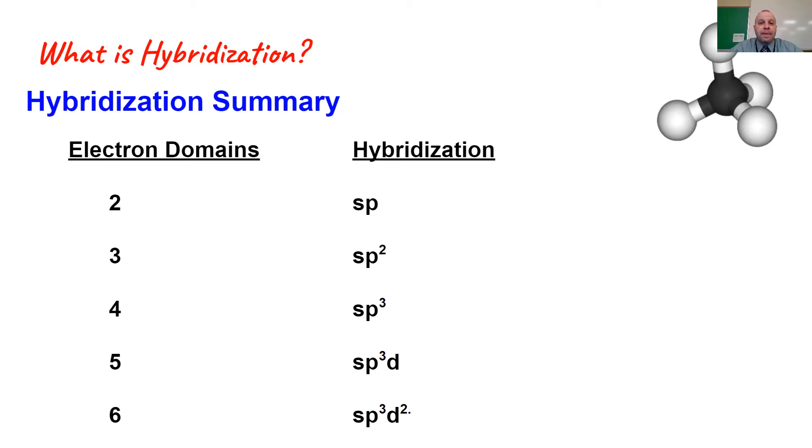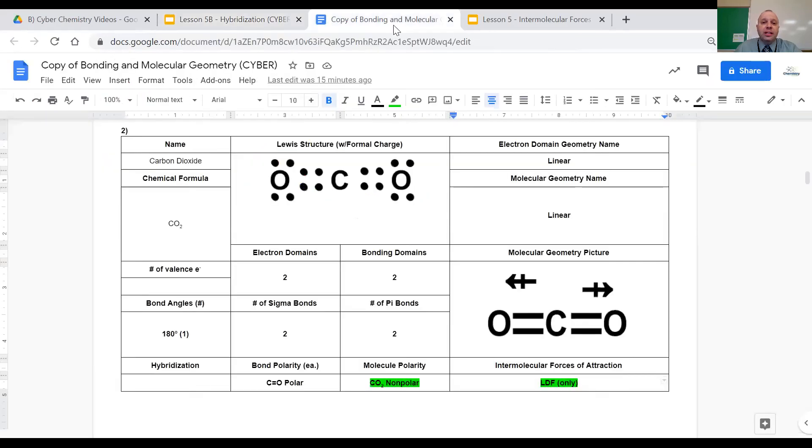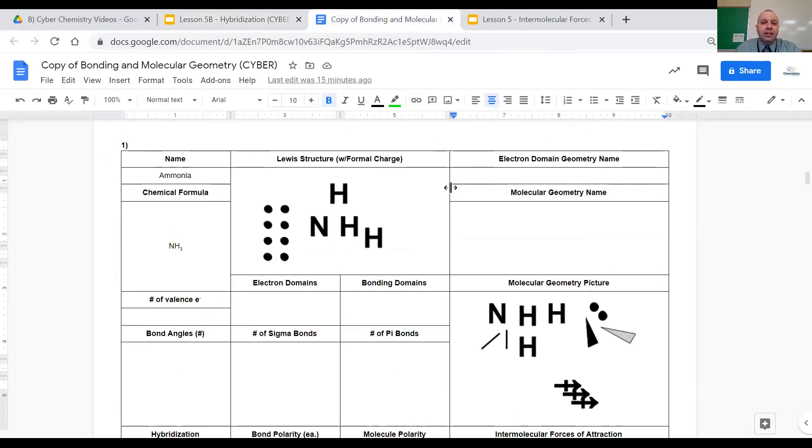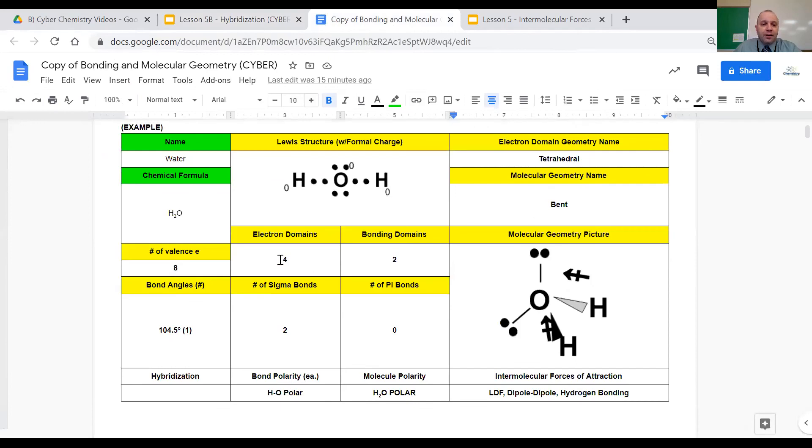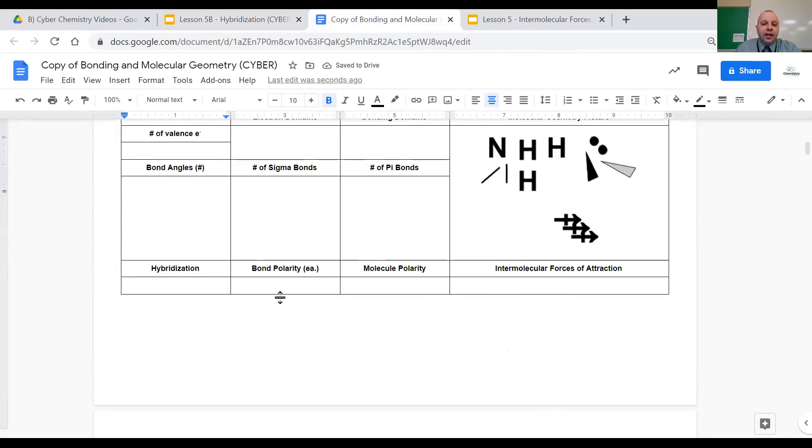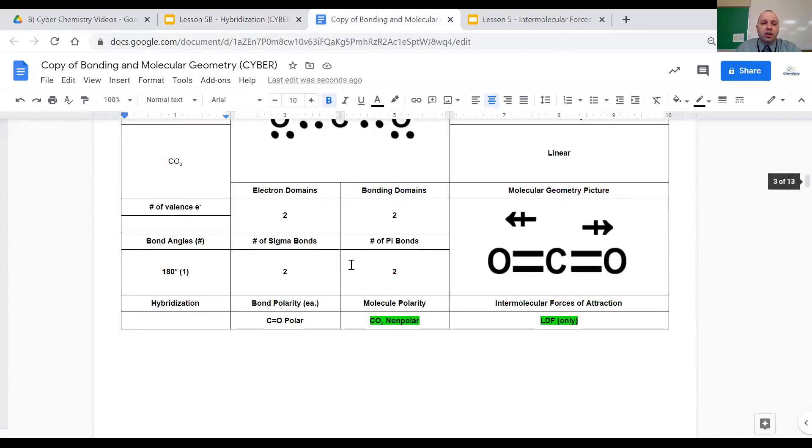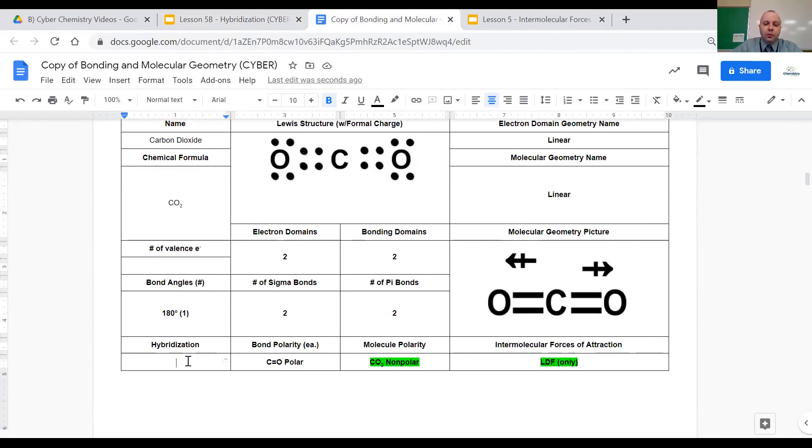So if you go back and look at the examples that we have been talking about in the bonding and molecular geometry packet, if we go back up to our first example for the number of electron domains for water, we have four, so based on what I just said, this should be sp3 hybridization. And if we scroll down to the example with carbon dioxide where we had just two electron domains, this would be sp hybridization.